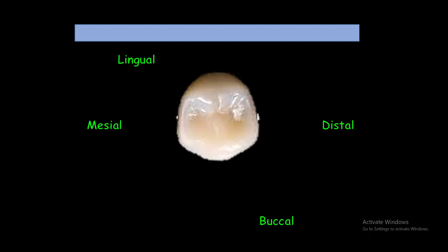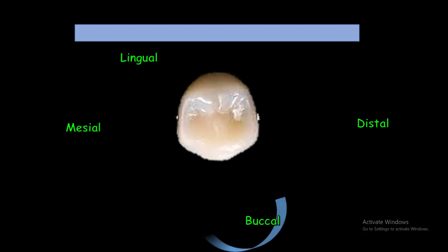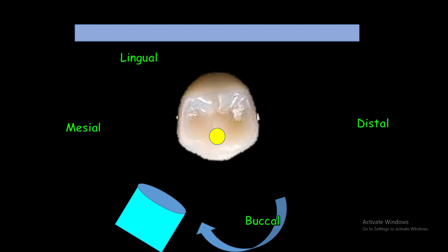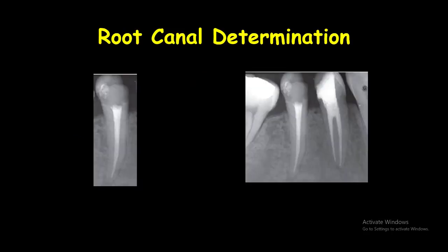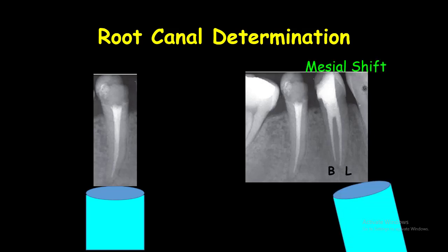When doing root canal therapy, you have to identify the superimposed canals. In this example, we have a premolar with two canals — one in the buccal and one in the lingual. In the straight right-angle periapical radiograph, the two canals are superimposed on each other. To split the canals, the tube head is shifted towards the mesial. The lingual canal follows the same direction as the tube head movement and is imaged on the mesial of the radiograph. The buccal canal follows the opposite direction and is imaged on the distal. The canal on the mesial of the radiograph is therefore the lingual canal.